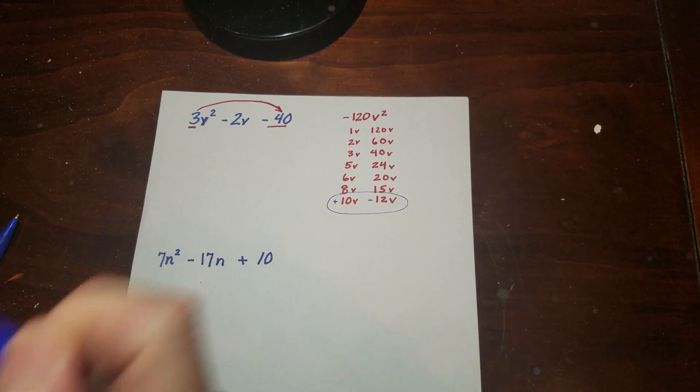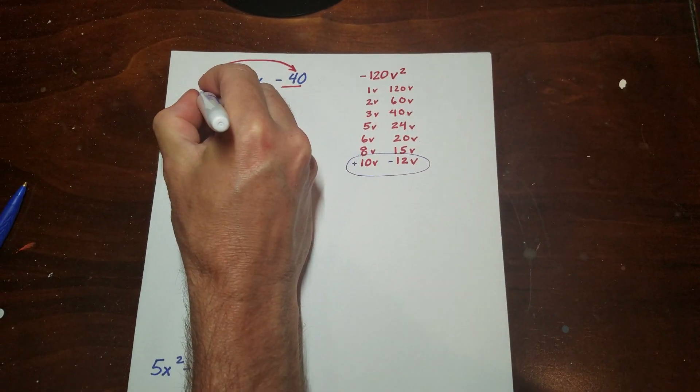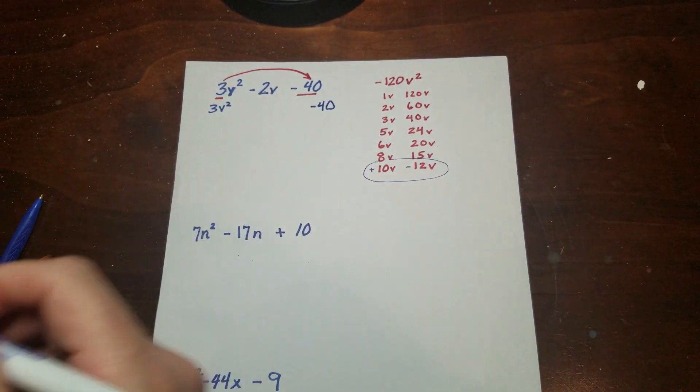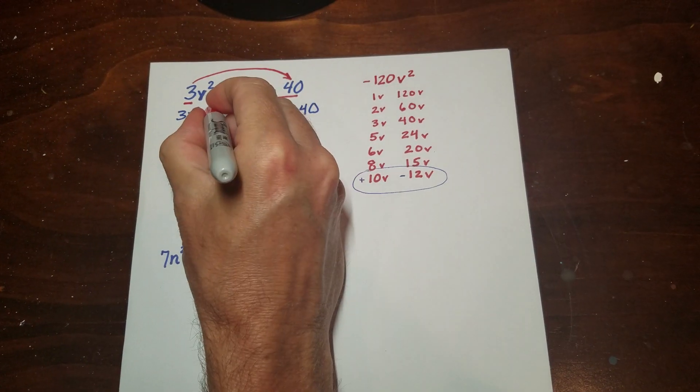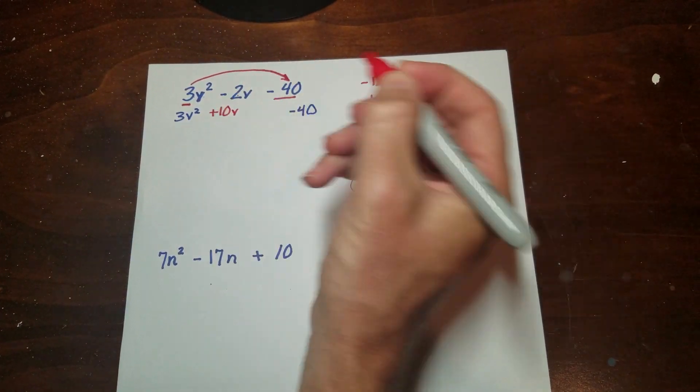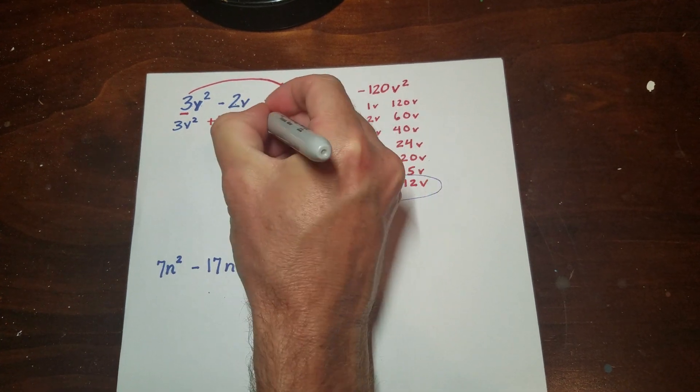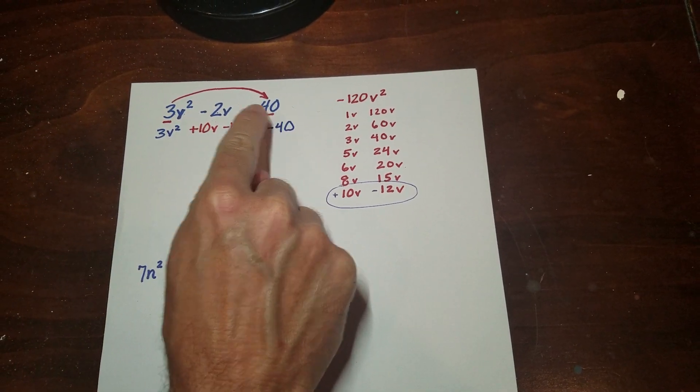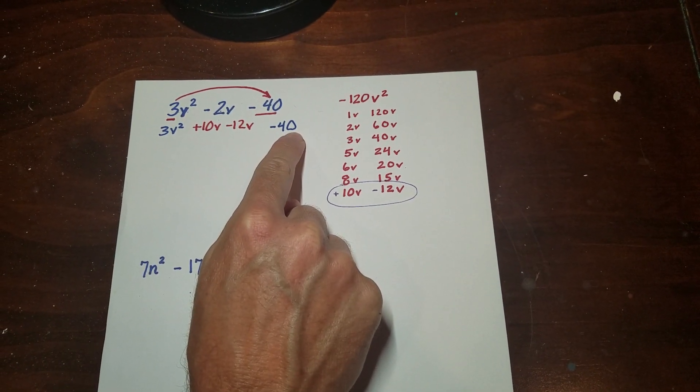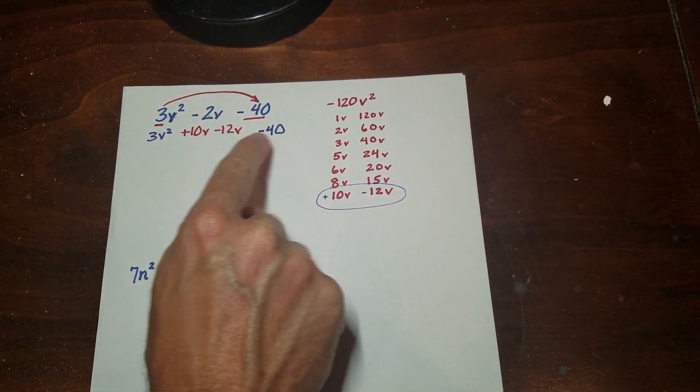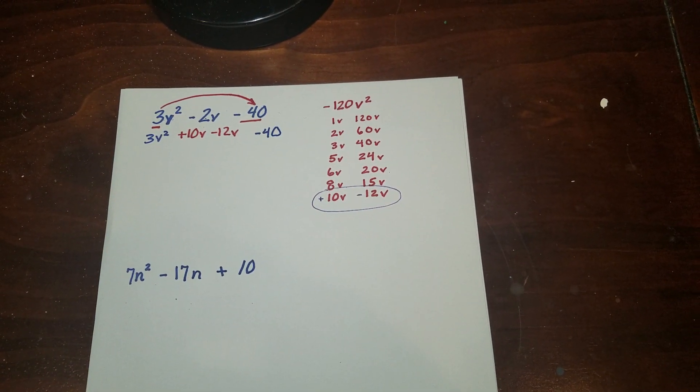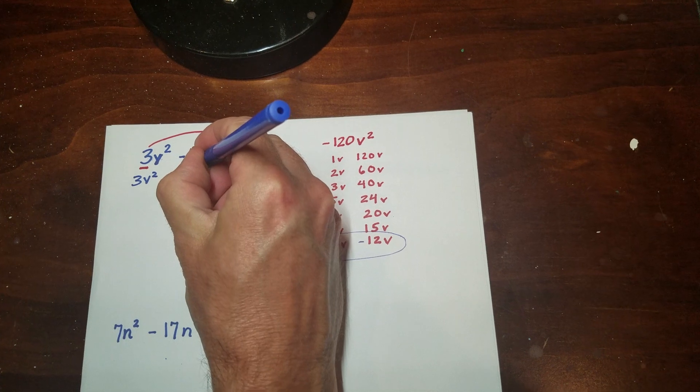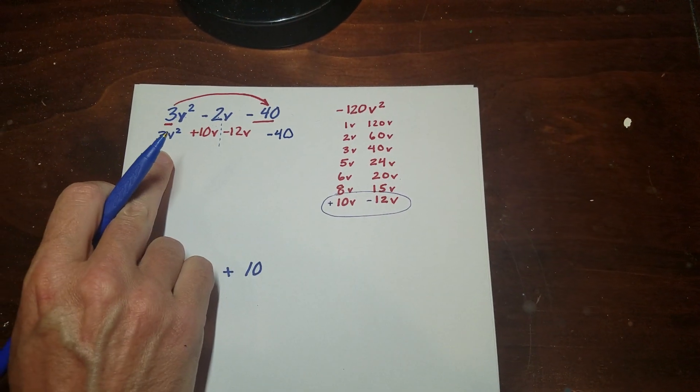So now what I'm going to do is I'm going to rewrite this. And then I have the negative 40 over here. And then what I'm going to do is I'm actually going to put those two factors in the middle like this. So if you look at what I have here, this expression and this expression, they're the same thing. If I add these two together, I'm just going to get this. So right now I haven't changed anything. But what this allows me to do is to separate it into two pieces.